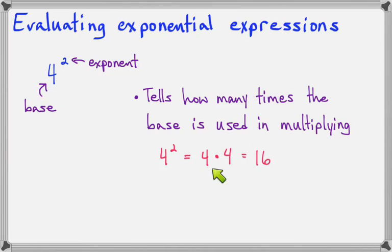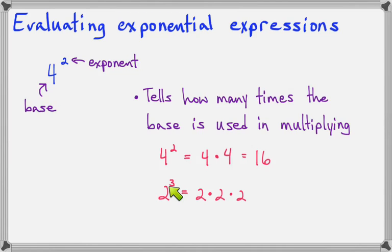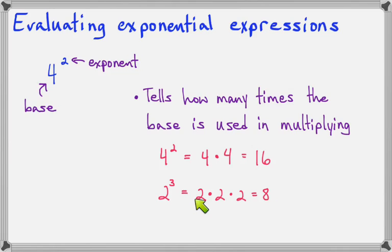The 2 tells me to put the 4 down twice. In this next example, 2 to the third is going to give us 2 times 2 times 2. The exponent of 3 means the number appears 3 times. 2 times 2 is 4, and 4 times 2 is 8. It's really common for people to look at this and think it's going to be 6, but 2 times 2 is 4, and 4 times 2 is 8.